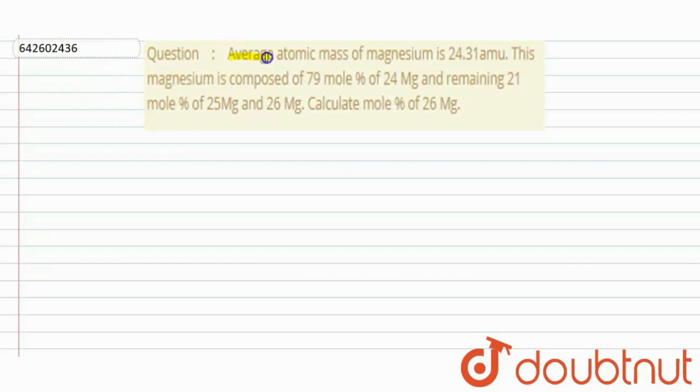The question says that the average atomic mass of magnesium is 24.31 amu. This magnesium is composed of 79 mole percentage of 24 magnesium and remaining 21 mole percentage is of 25 magnesium and 26 magnesium. Calculate the mole percentage of 26 magnesium.